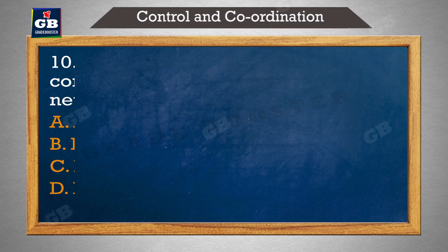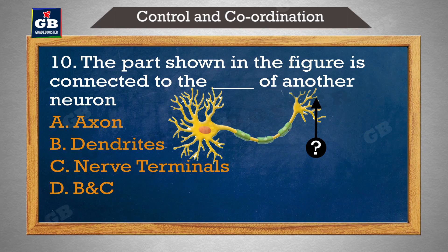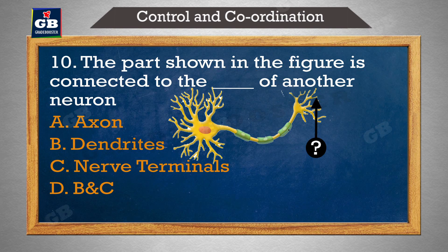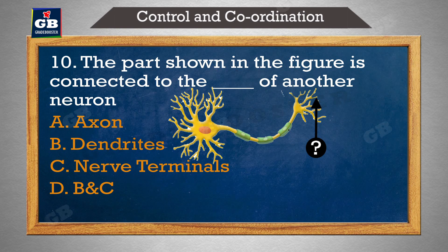The part shown in the figure is connected to the dash of another neuron — chitr mein dikhaya gaya hissa ek aur neuron ke dash se joda hoga: A) axon, B) dendrites, C) nerve terminals, D) B and C.